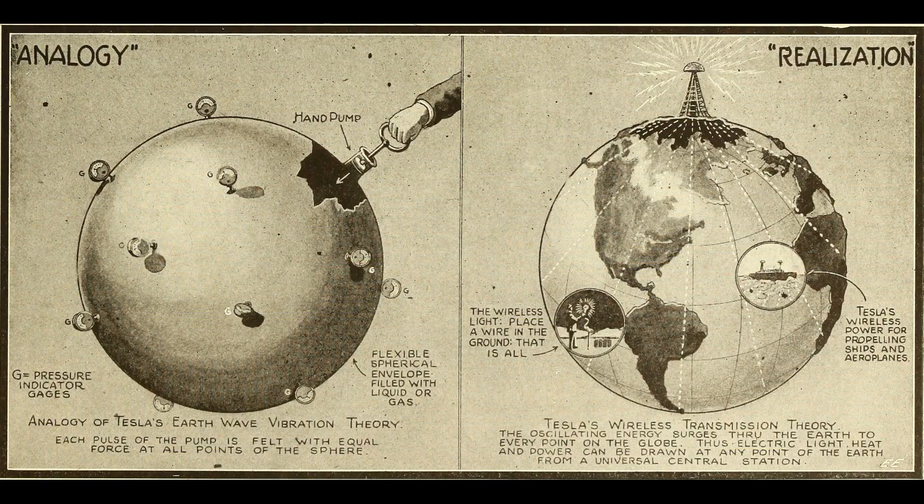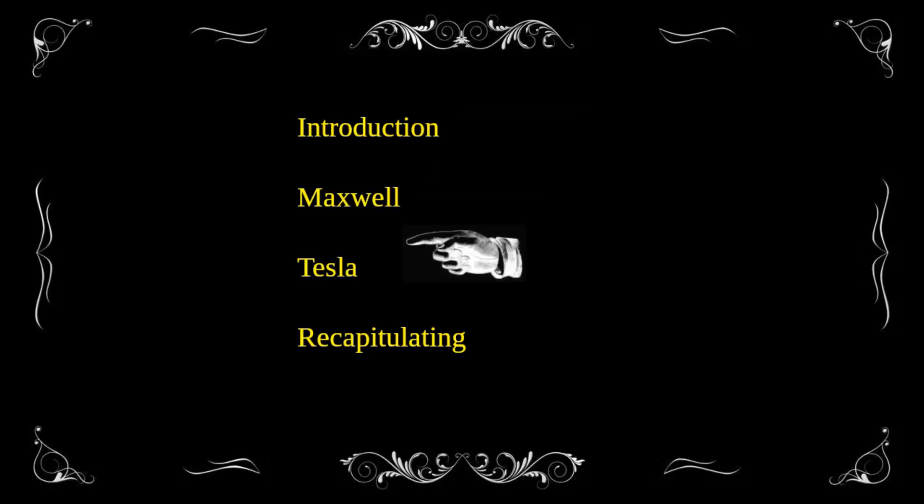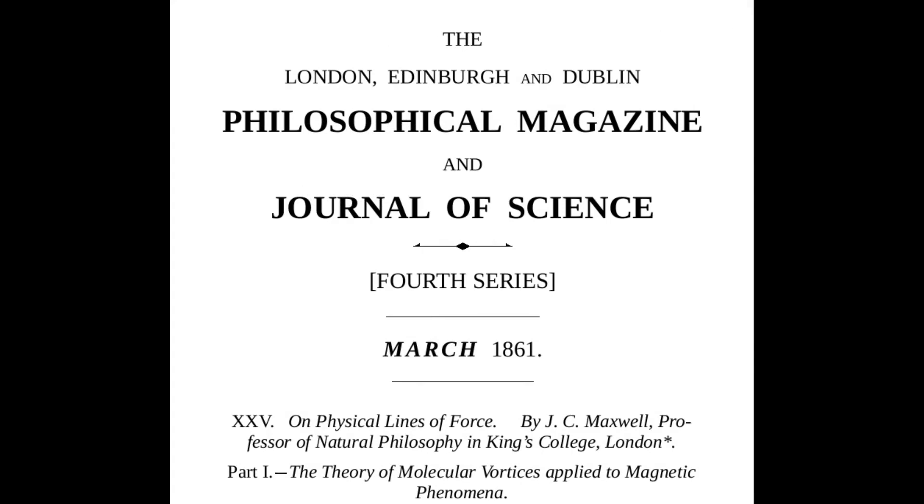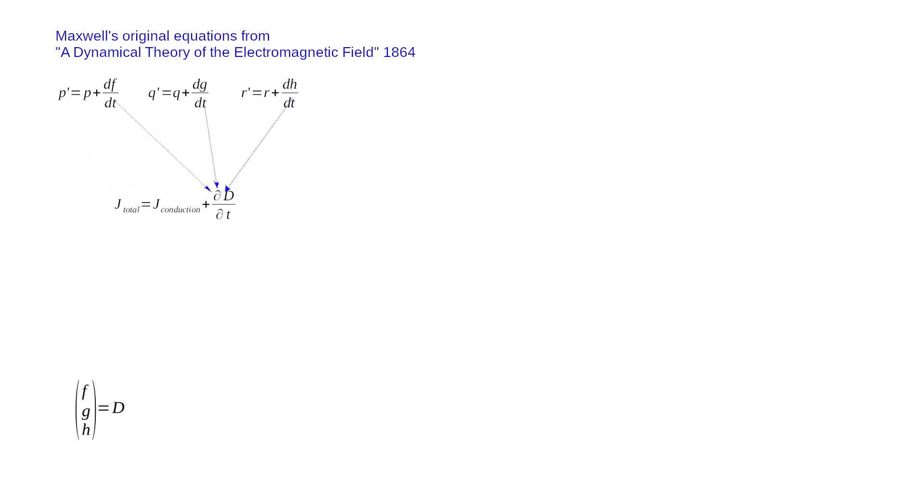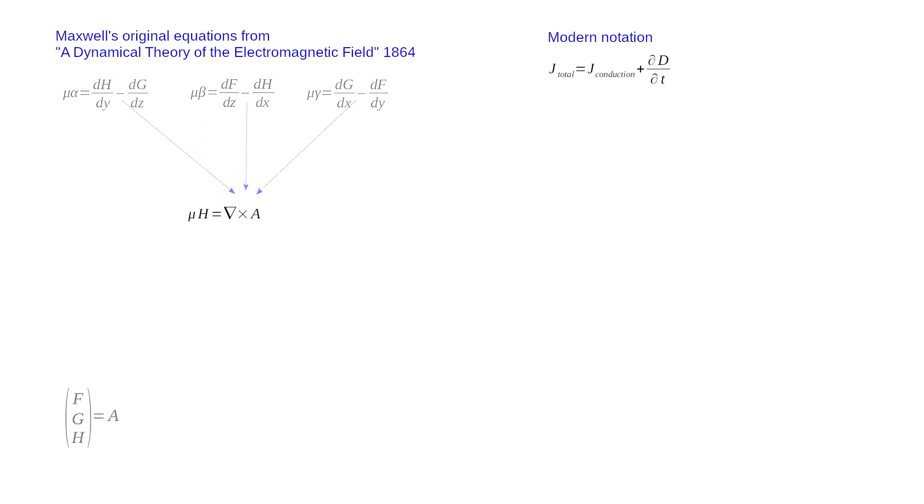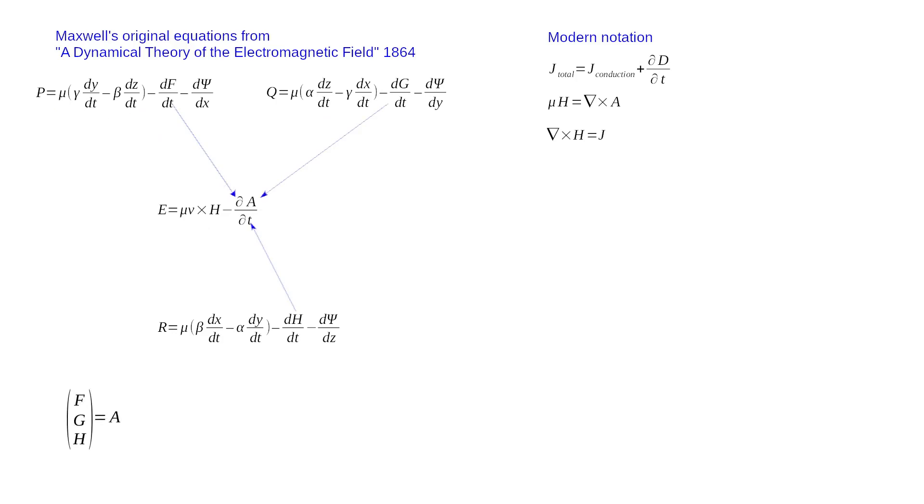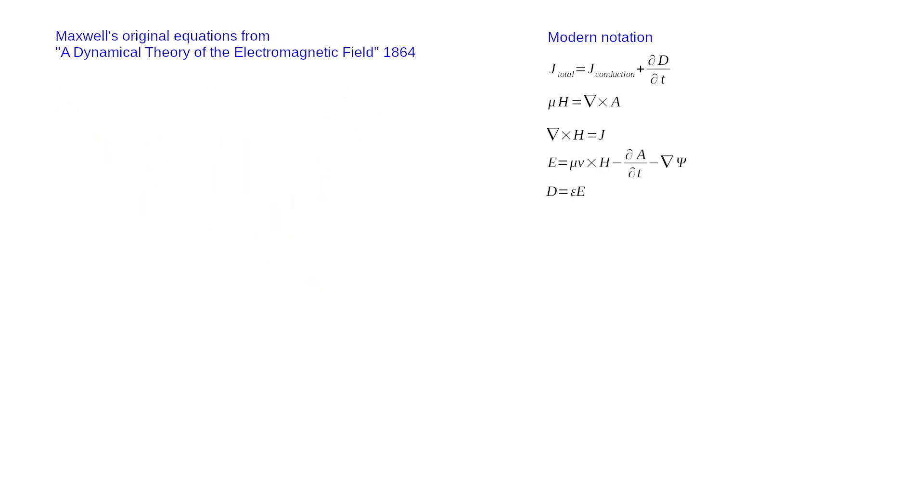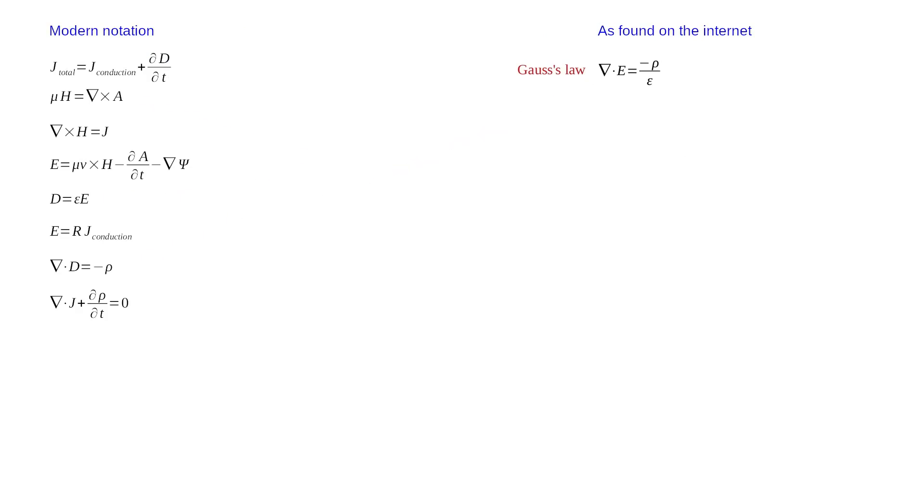But are these standing waves possible in the earth? In 1861 James Clerk Maxwell published his first version of his now famous equations. In 1864 he summarizes his previous work into 20 equations. Using modern vector notation these can be rewritten into 8 equations. But when you search online for Maxwell's equations you usually only find four which are derived from these eight. But wait a minute. Did some term get ignored?